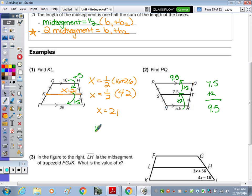Let's go back and actually answer the questions. KL was 21, and here PQ is 9.5.